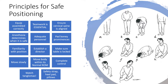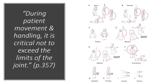The book also covers different range of motion movements like flexion, extension, and abduction. A key quote from page 357: during patient movement and handling, it is critical not to exceed the limits of the joint. When a patient is sedated or unconscious, they cannot tell us if something is uncomfortable — if we've extended a hip or shoulder too much, or rotated something too far. We must ensure we are not moving them outside their normal range of motion.